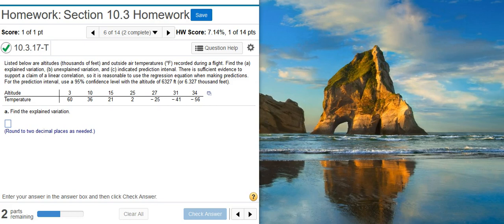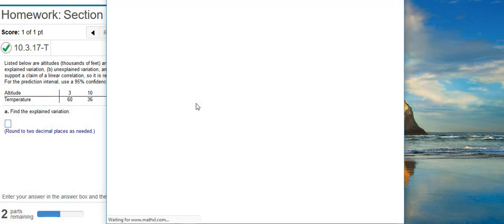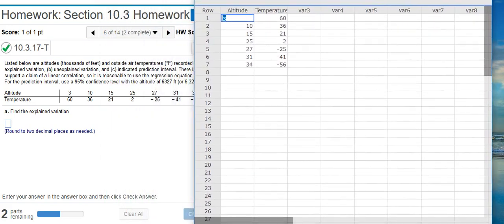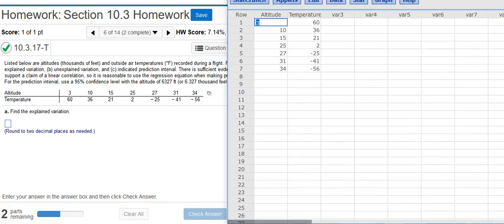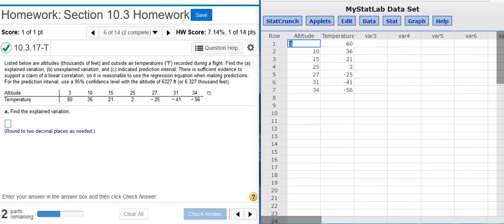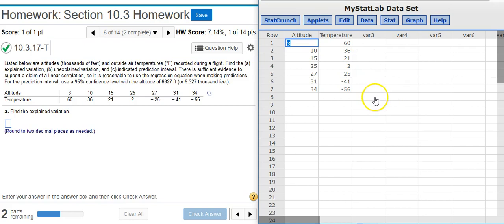So, part A asks us first find the explained variation. To do this, I'm going to place my data into StatCrunch. So, here I have my data in StatCrunch, and I'm going to resize this window a bit. Okay, now we're ready to go.